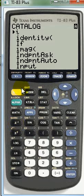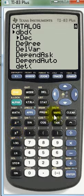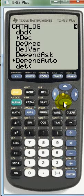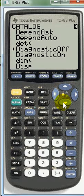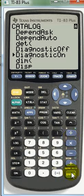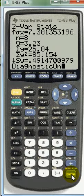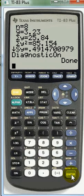We're going to go down to D - I want D. Here's diagnostics on, so go to the catalog, which is second zero, and then go to diagnostics, which is D.